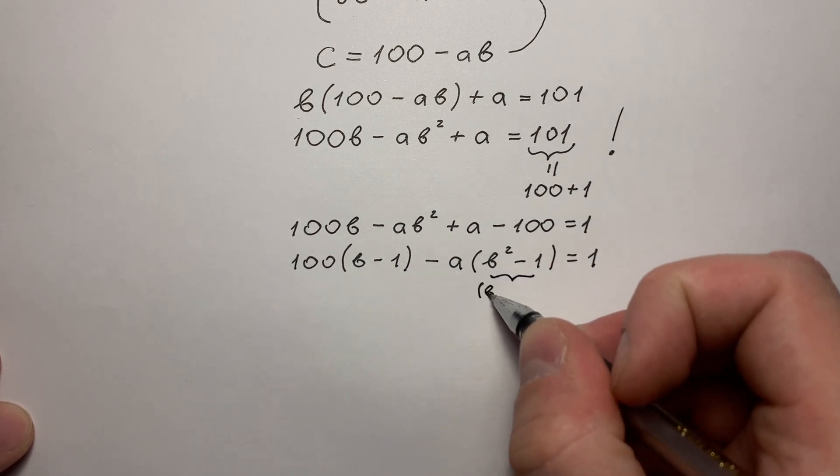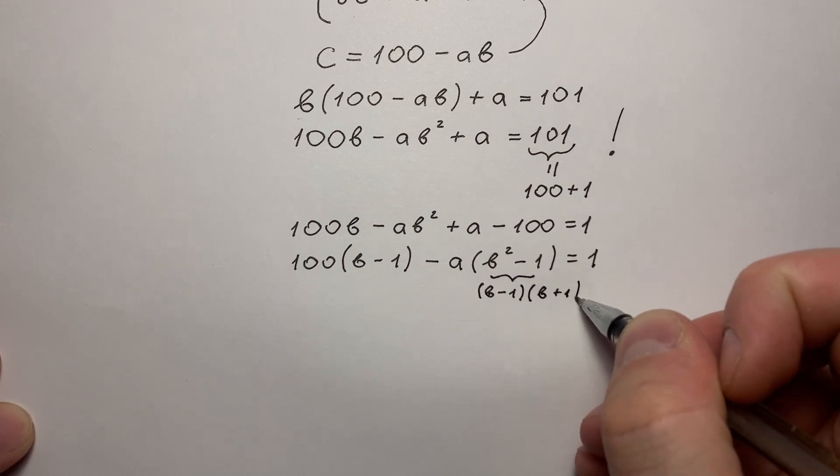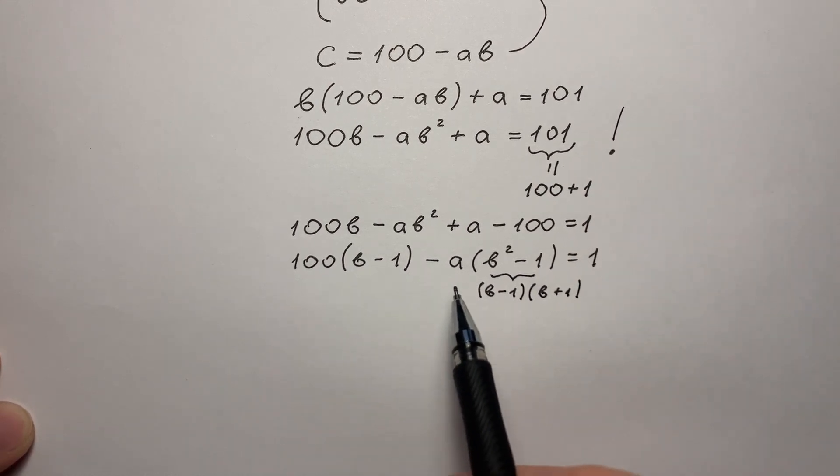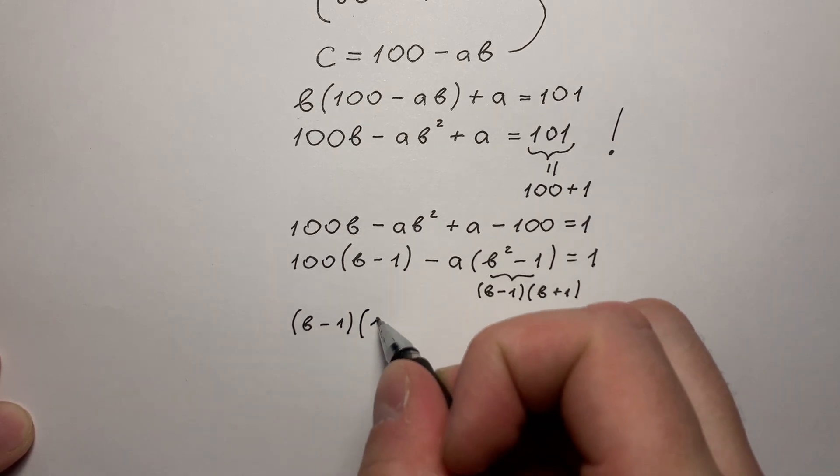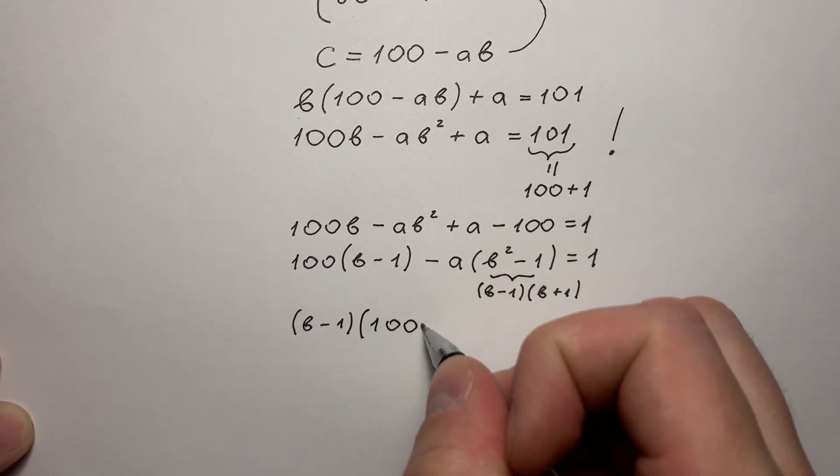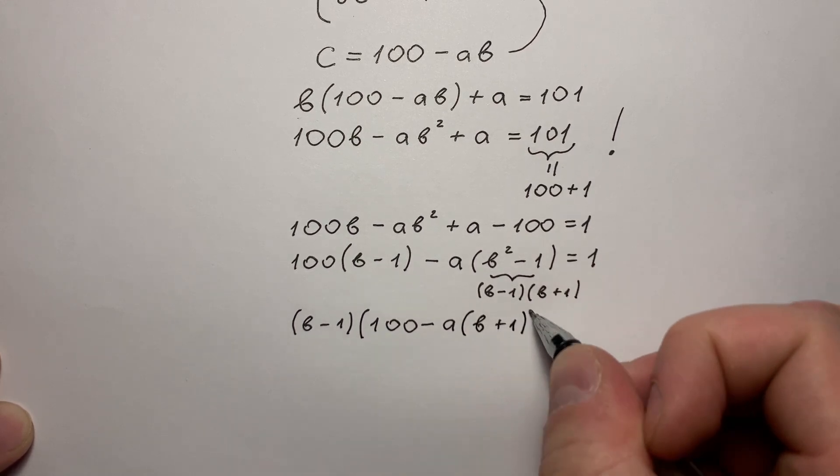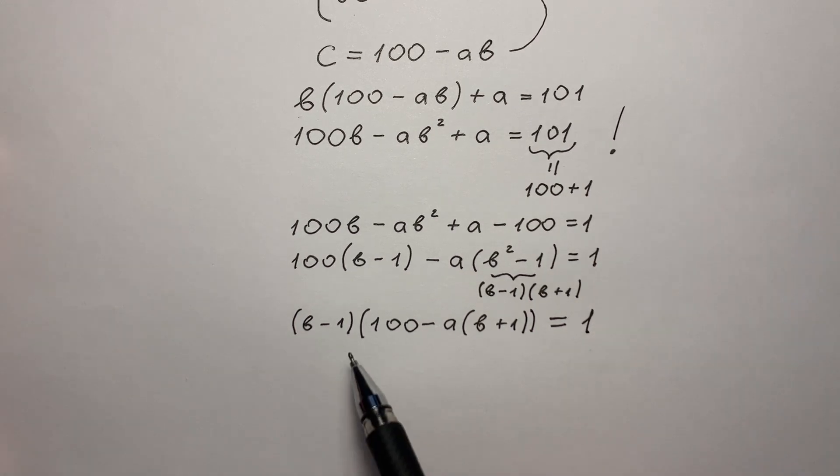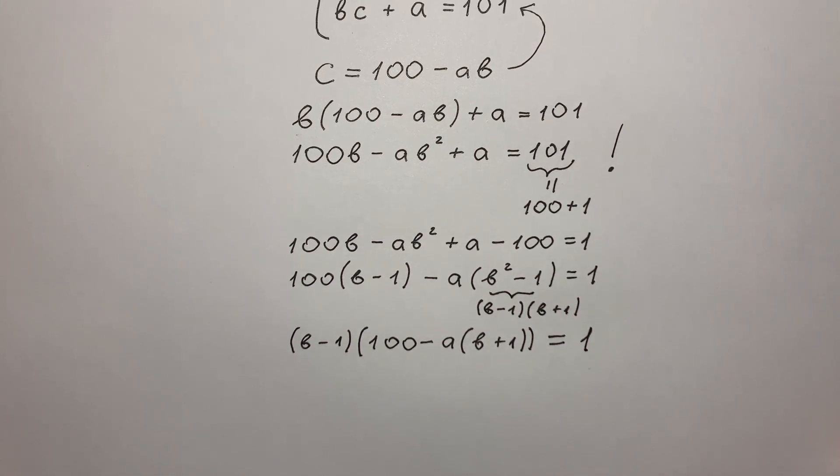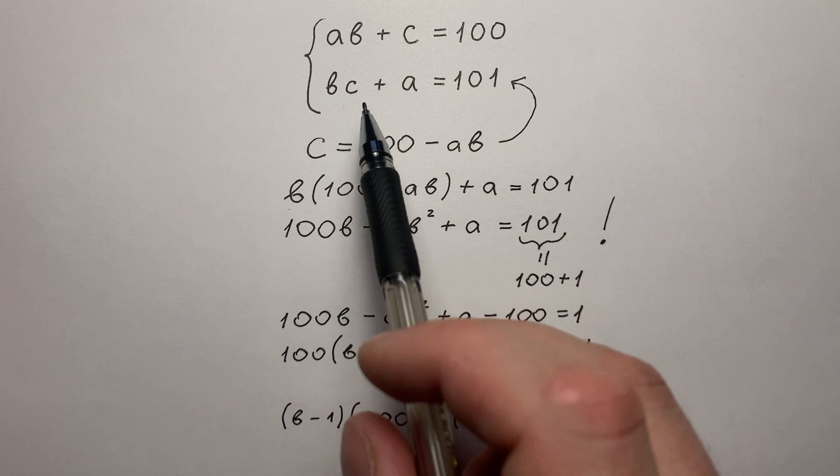So we can put B minus 1 in the first bracket. And in the second bracket we have 100 minus A times B plus 1 and it all equals 1. We're looking for the whole number solution for this system.